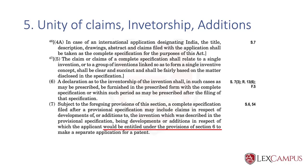Finally, a complete specification filed after a provisional may include claims in respect of developments and additions to the invention which was described in the provisional. These developments and additions would be entitled under Section 6 to be made into a separate application for a patent. So when you file a complete following a provisional and there are certain developments and additions that happened after filing the provisional, they can be covered as part of the complete — but those claims will have a different priority, which will be covered in detail when we discuss Section 11.